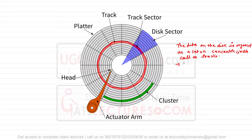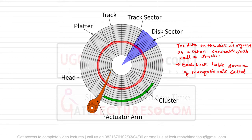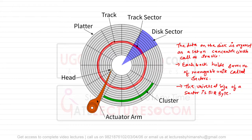Each track holds the same number of manageable units which are called sectors, and the universal size of a sector is 512 bytes. The disk space without format overhead is called the formatted disk space. The basic unit of transfer is a sector — that means whenever the CPU is going to request some data, it is going to transfer the entire sector through the read/write head.